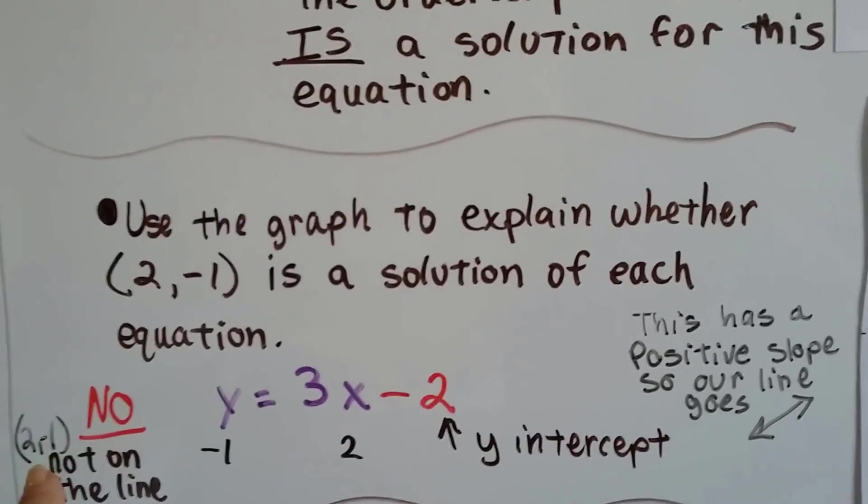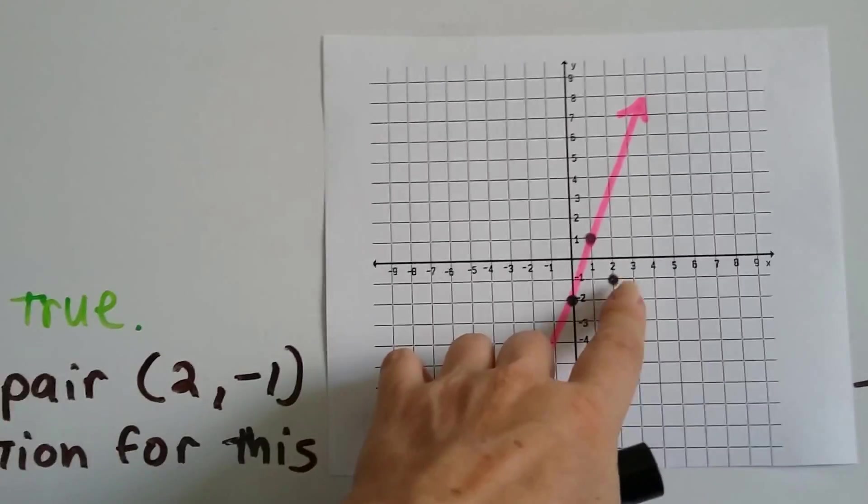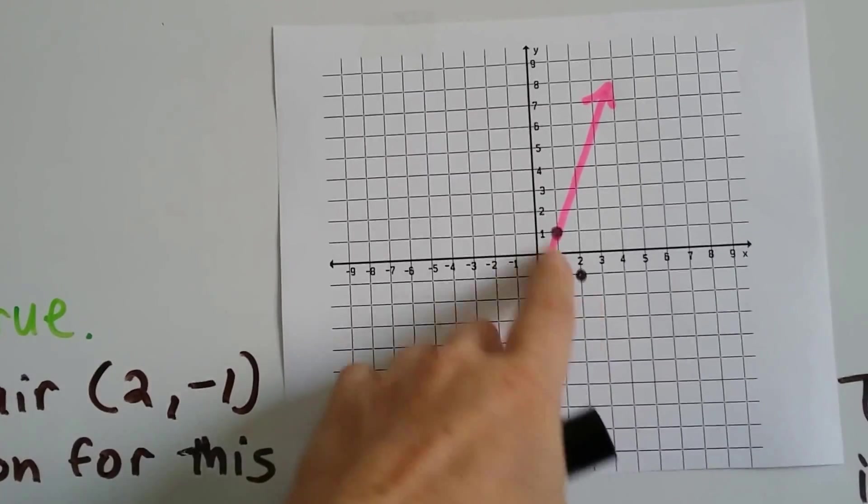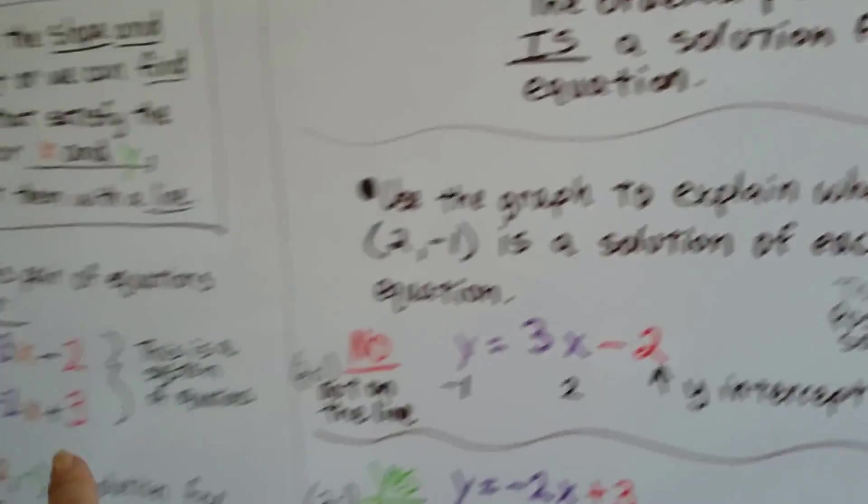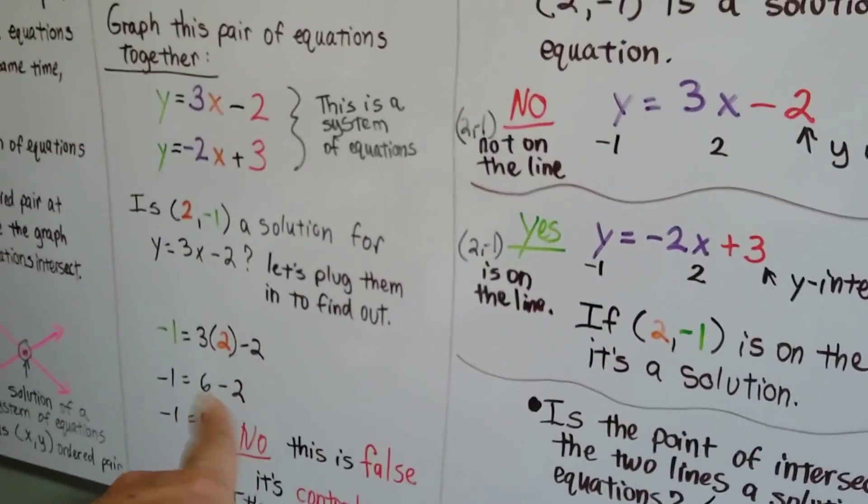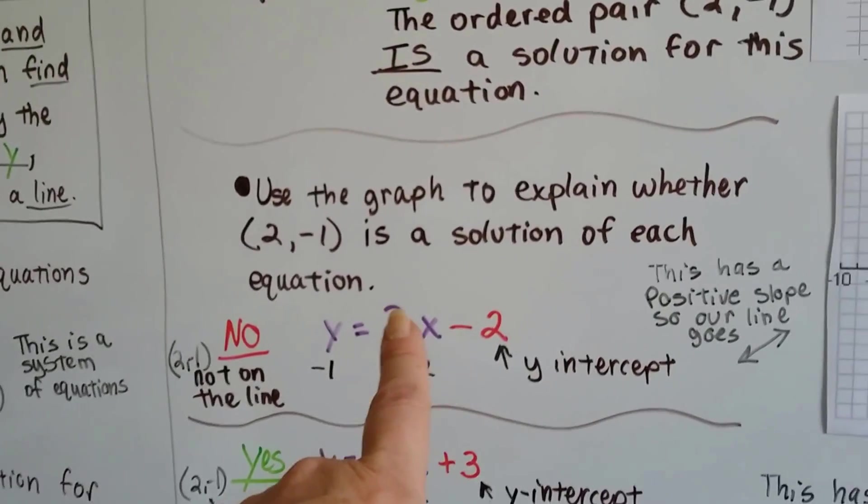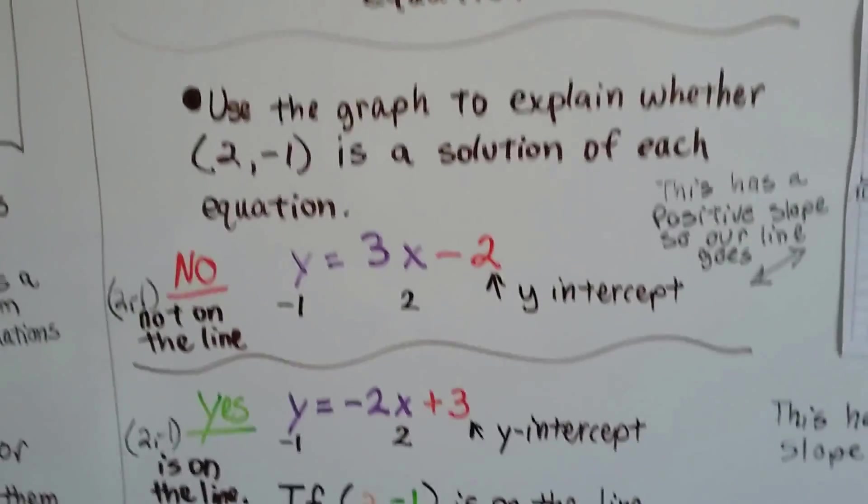So now, is it on the 2, negative 1? Well, here's 2, negative 1. So no, this line does not touch that point at all. So it's not a solution. Just like when we tried plugging it in, it wasn't a solution. It's not on the line, and we tried graphing it. It's not a solution.